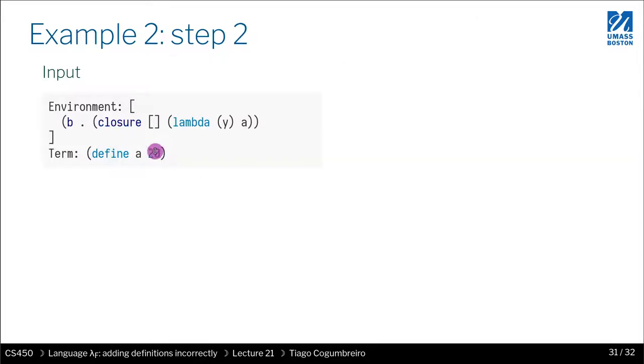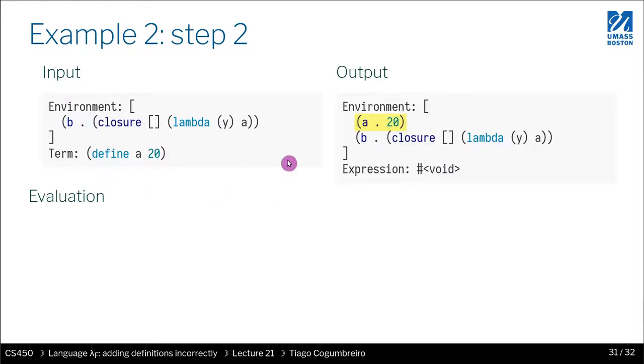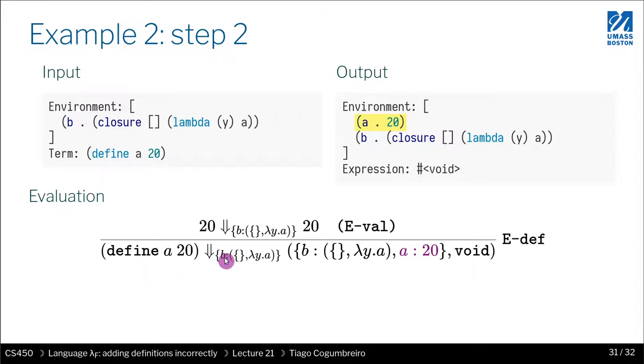So now what we do, let's evaluate A with the value 20. And now it shouldn't be too surprising. What we do is we extend the environment with the binding of A assigned to 20. And again, return void.